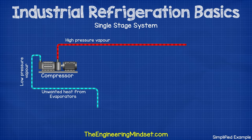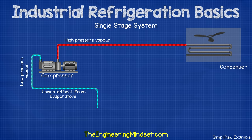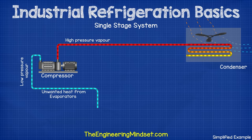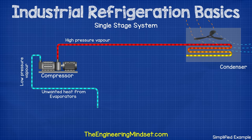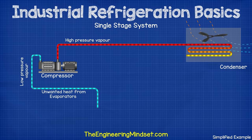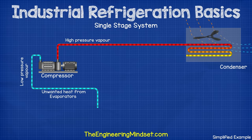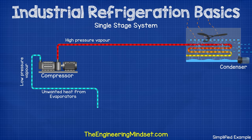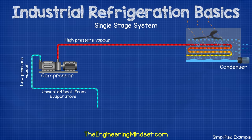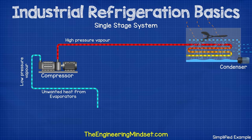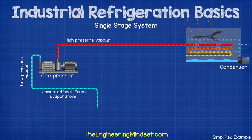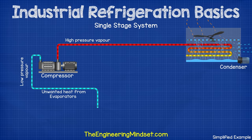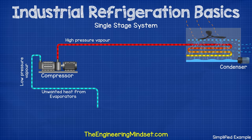The high pressure refrigerant vapor exits the compressor and flows to the condenser. The condenser cools the refrigerant down by pulling the unwanted heat out and discharging it into the ambient outside air. This is typically done by passing the hot refrigerant through the inside of some small tubes and using a fan to force the cooler ambient air across the outside of the tubes. We'll often find a small pump spraying water over the pipes as well — some of this will evaporate and help carry more heat away. The refrigerant is sealed inside the pipe and does not come into contact with the air or water; only the heat passes through the pipe wall.